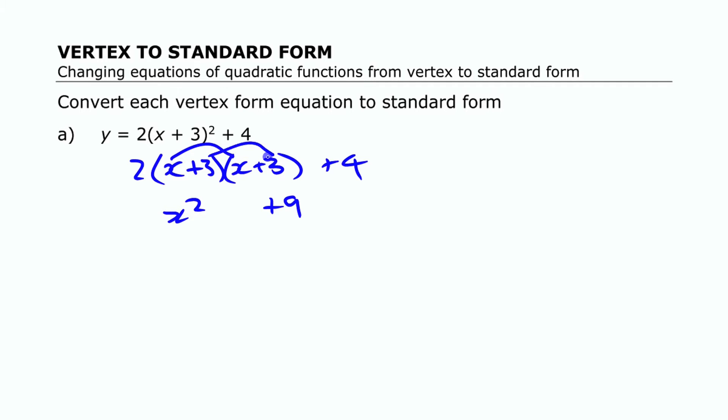The x squared is there and the 9 is there but you need the middle term which is going to be 6x and then of course we still have this 2 out in front and we still have this 4 on the end.